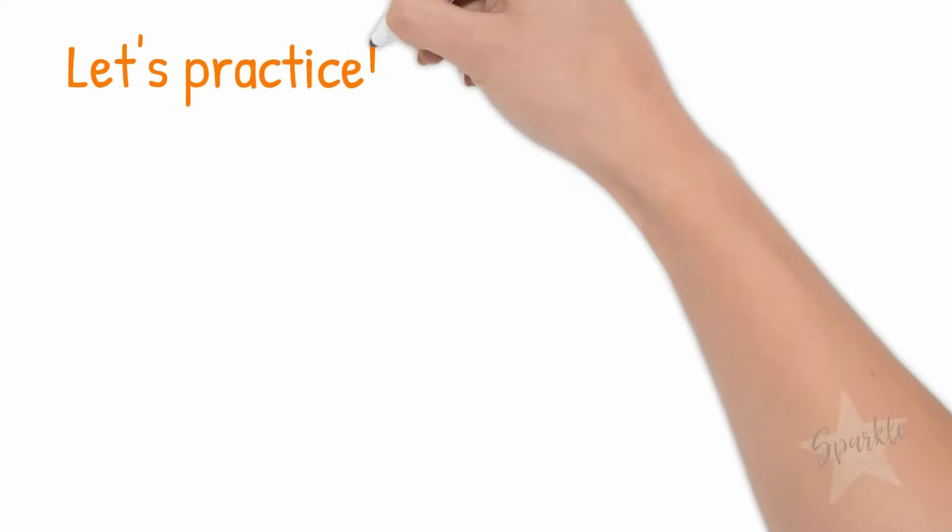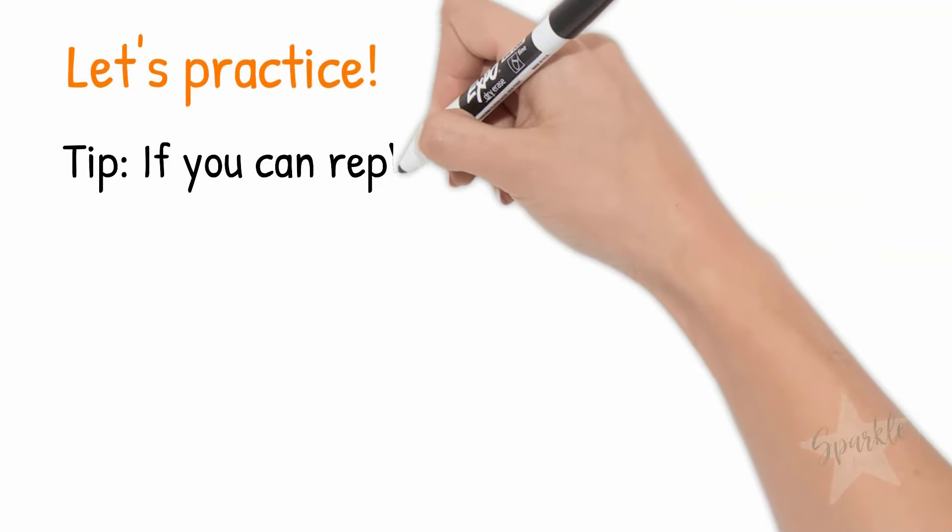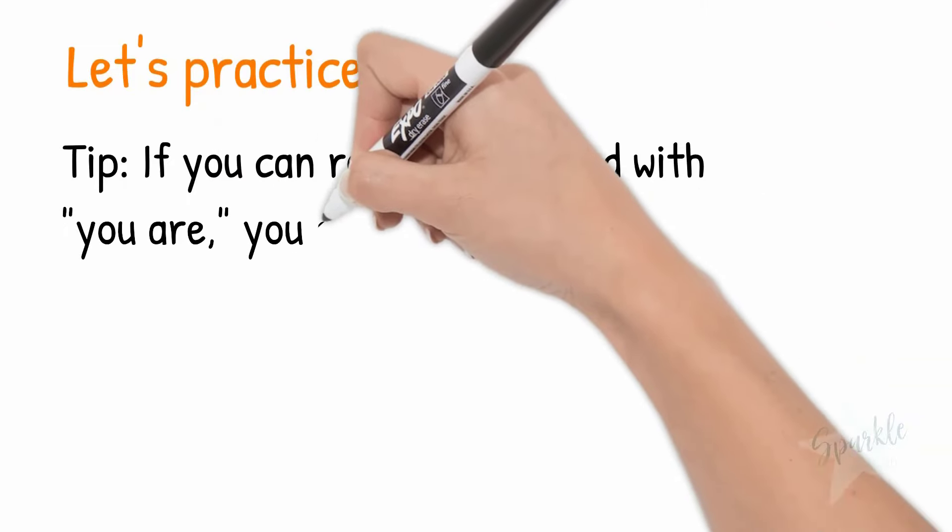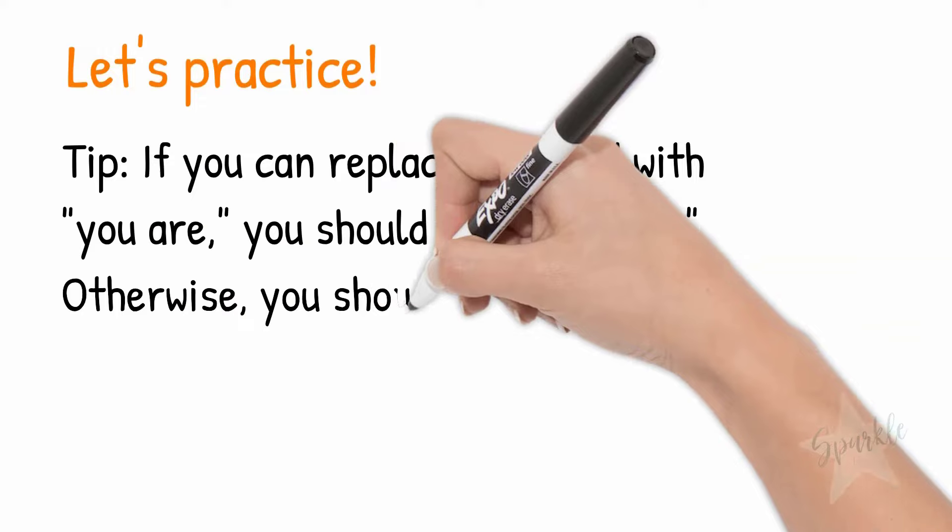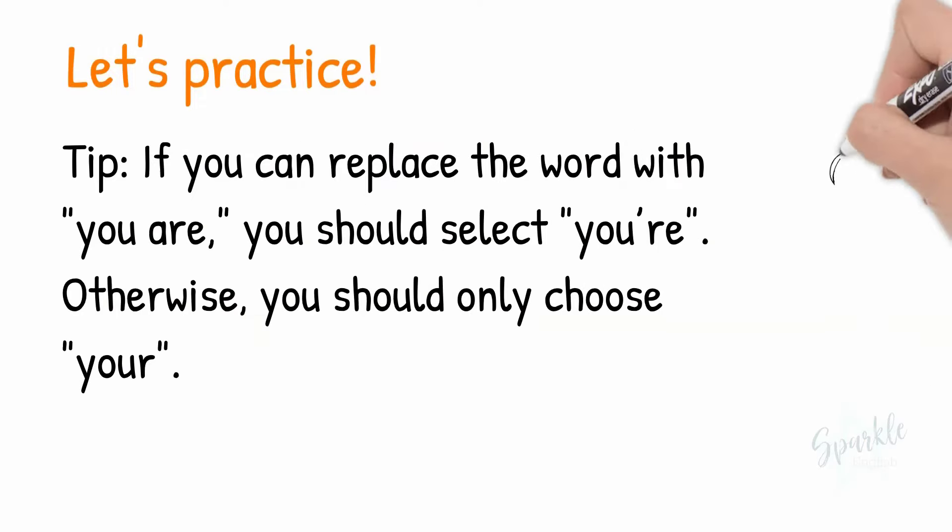Now let's do some practice together. But first, here's another tip. If you can replace the word with you are, you should select you're with an apostrophe R-E. Otherwise, you should only choose your.